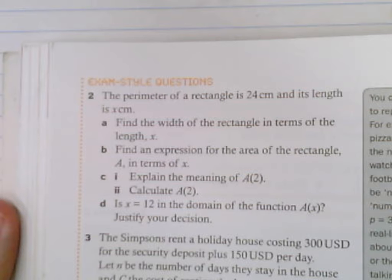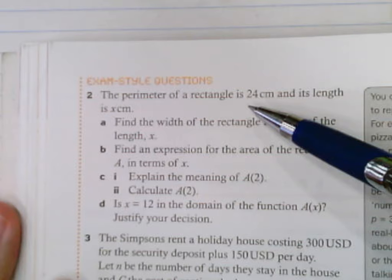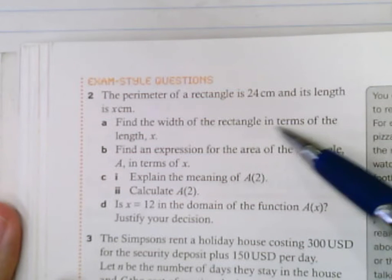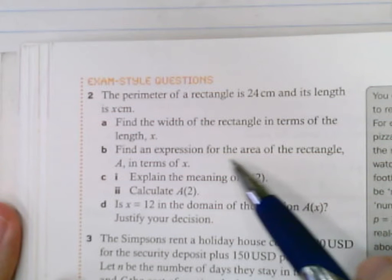So the first question is similar to the one that we've been doing, but this one is just a rectangle. It says the perimeter of a rectangle is 24 centimeters and its length is x centimeters. Find the width of the rectangle in terms of the length x. Find the expression for the area of the rectangle A in terms of x.